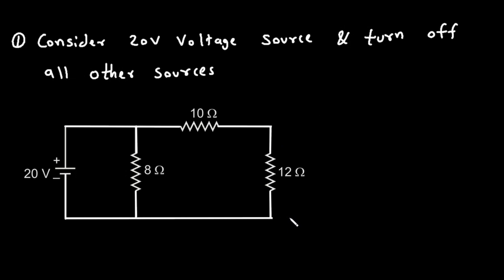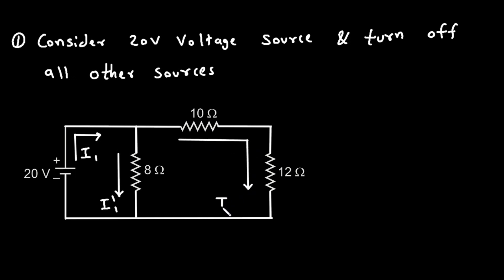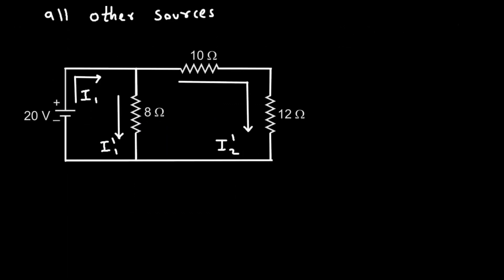Now we have to find these currents. The direction of current will be downward because of the positive polarity here. Let's call this current I1. We also have currents I1 prime and I2 prime to find. We will find the value of I1 prime by using the current division rule.